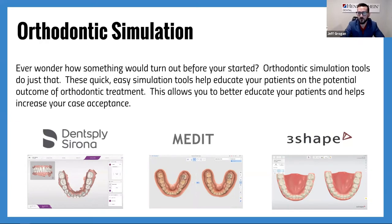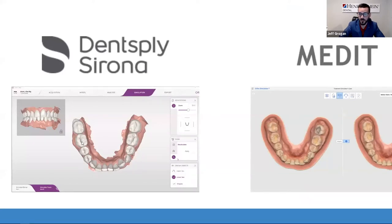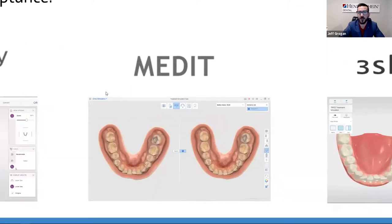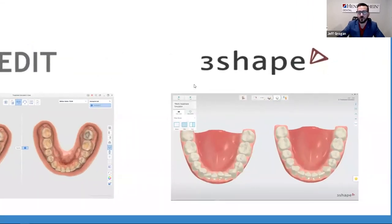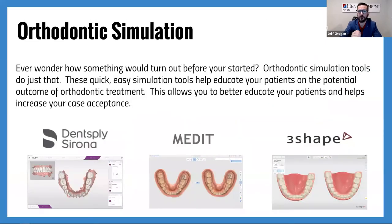To give a snapshot of what some of these tools do, I ran the same case through Dentsply Sirona's orthodontic tools, Medit's ortho simulation, and 3Shape's treatment simulator. All three have a lot of the same principles but operate slightly differently. Both Sirona and Medit incorporate analytics — segmenting tooth from tooth, tooth from tissue — and provide reporting alongside that ortho simulation. 3Shape is a very instant-gratification, quick, easy ortho simulator for doing something very quickly chairside.